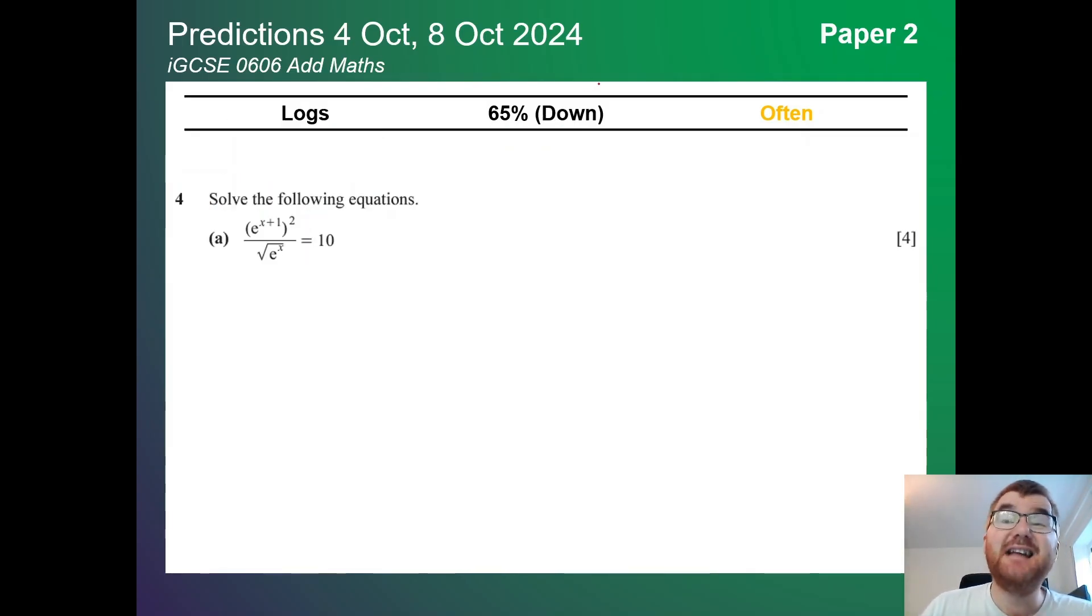Logs here. Again slightly down on paper 2, so it's more of a paper 1 topic but still at 65%. Notice you need to know also your index laws as well. We haven't put that as a specific topic. That's usually pre-knowledge from the IGCSE courses. But very importantly, be able to work with e and natural log.